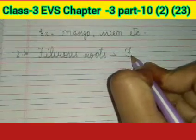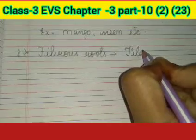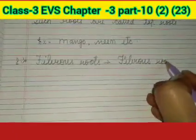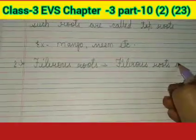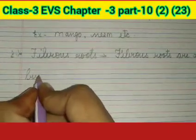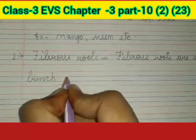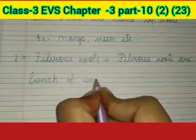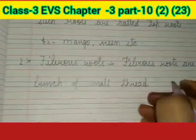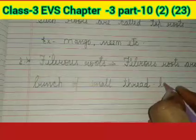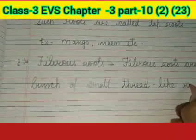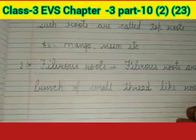Fibrous roots are a bunch of small thread-like roots. Example.